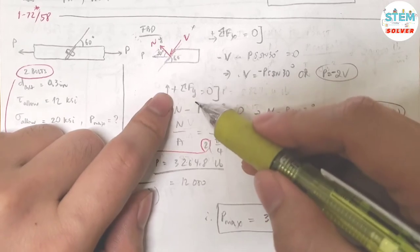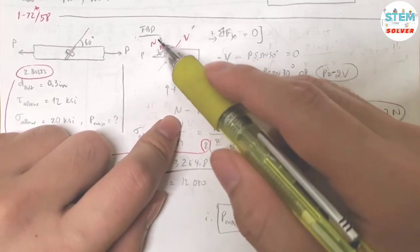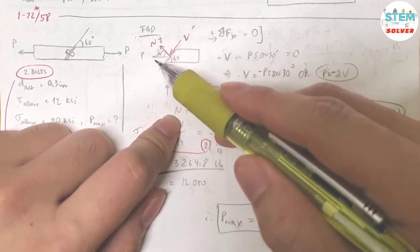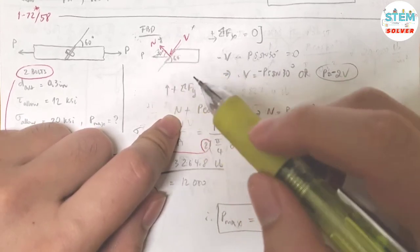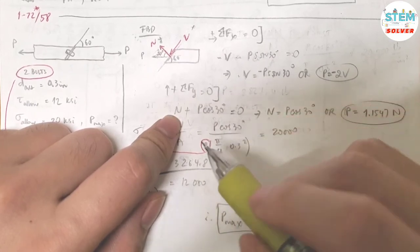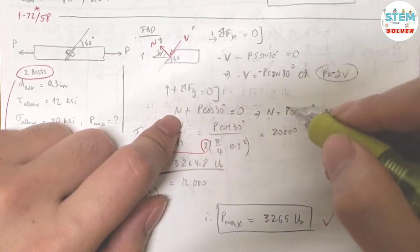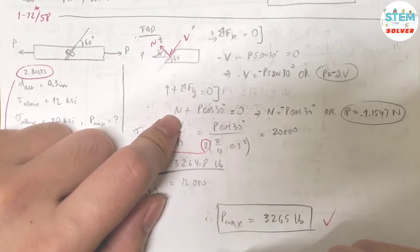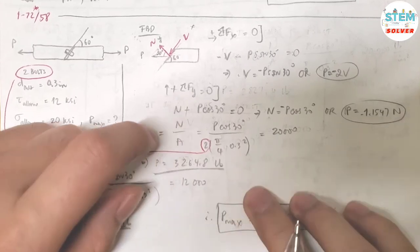Now let's do the summation about the Y axis. So I have positive N plus positive P cosine 30, because it's pointing upward. Set that equal to zero. Then solving for N, I got negative P cosine 30, or P equals negative 1.1547N. Not N subscript, but N. This represents the normal force. So be careful.